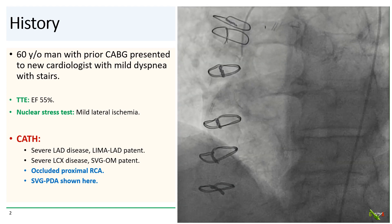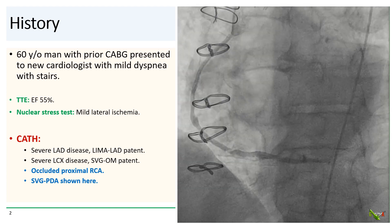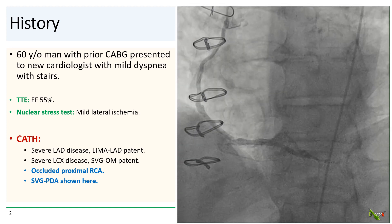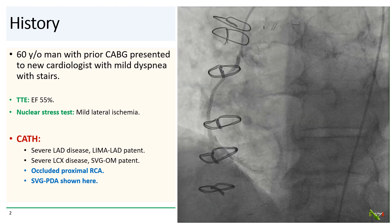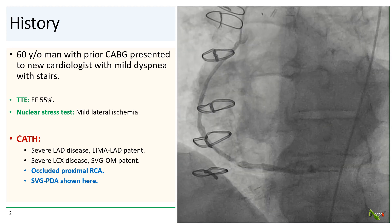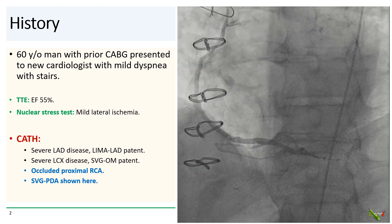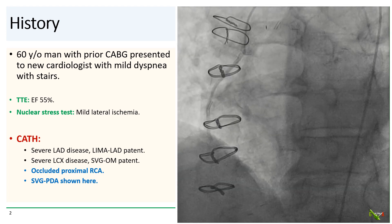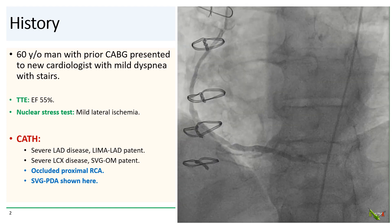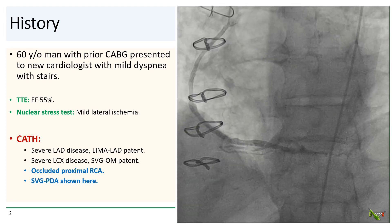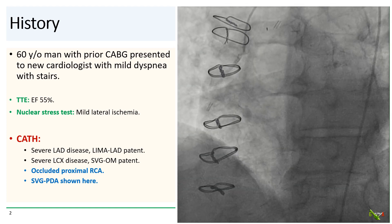On cath, he had severe LAD and circumflex disease, but both the LIMA to the LAD and the vein graft to the OM were widely patent. The RCA was completely occluded proximally, and the SVG to the PDA is shown here.